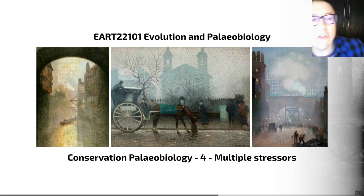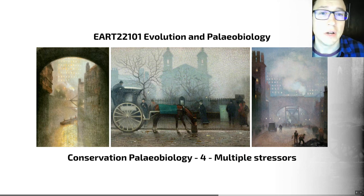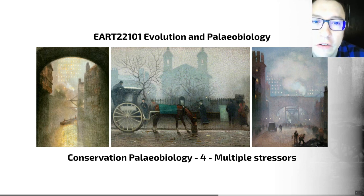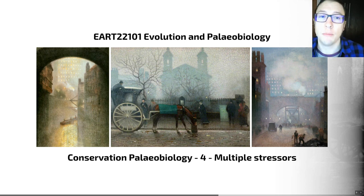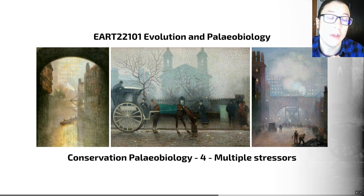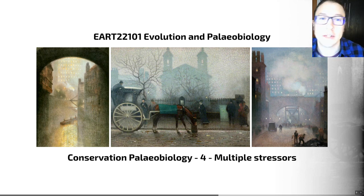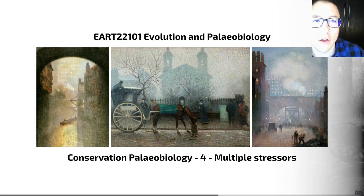We've just seen a series of different kinds of stresses and their impact on the ecosystem. I wanted to highlight with this video that stresses on ecosystems rarely apply in isolation. Today, for example, there is one cause responsible for multiple stresses impacting lots of ecosystems at once, and this is anthropogenic, human-driven activity. And this is a pattern that we also see in the fossil record — an event or event driver will often drive multiple stresses at once.